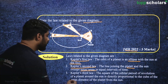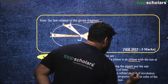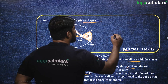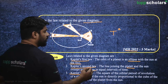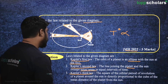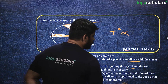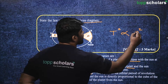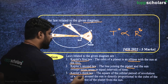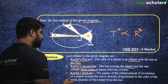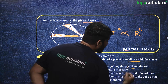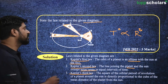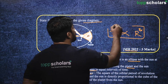Kepler's third law: the square of the orbital period of revolution of a planet around the sun — that is, T² — is directly proportional to the cube of the mean distance of the planet from the sun, often written as r³. So T² ∝ r³. This is Kepler's third law.